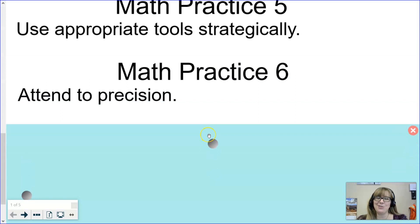Math practice six: attend to precision. This is one of my favorites because it does deal with accuracy - wanting to make sure we're doing things right. But it's so much more than that. Attending to precision is making sure that we have a good solid understanding of all of the definitions, terms, and symbols so that we can use them with accuracy, precision, and clarity.